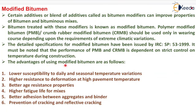The advantages of using modified bitumen are: lower susceptibility to daily and seasonal temperature variations, higher resistance to deformation at high pavement temperature, better age resistance properties, higher fatigue life for mixes, better adhesion between the aggregate and binder, and prevention of cracking and reflective cracking. That is all about bituminous materials. Thank you students.